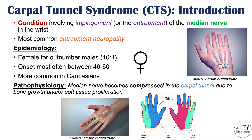The median nerve is responsible for sensation of half of the palm — the half closest to the thumb — and then the sensation of the thumb, the forefinger, the middle finger, and half of the ring finger. Specifically, it's the half of the ring finger closest to the middle finger. This is very important in understanding the signs and symptoms of this condition.